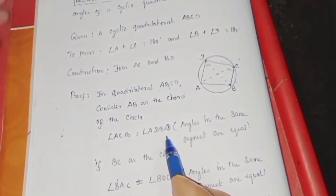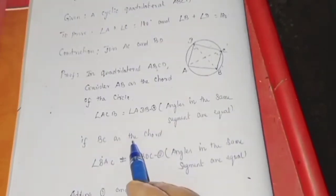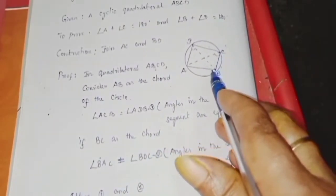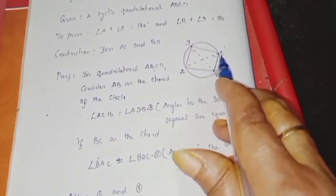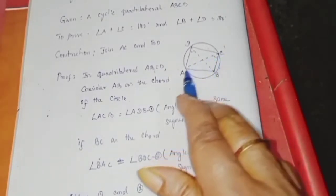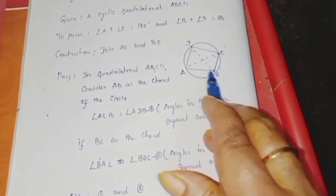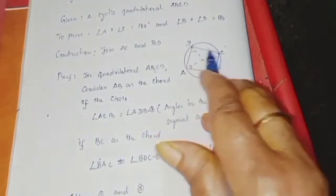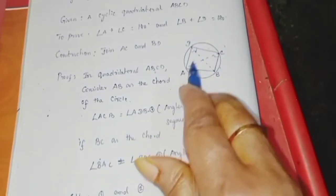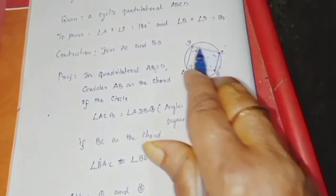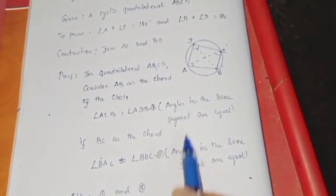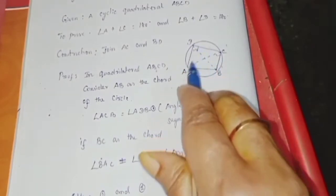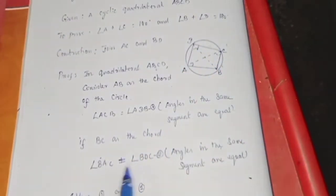Next, if BC is the arc, the angles subtended by BC in the same segment are also equal. This gives us the second equation.